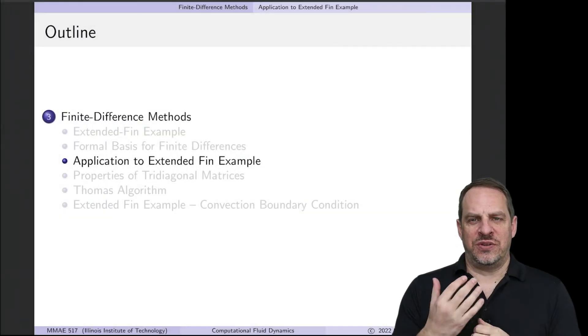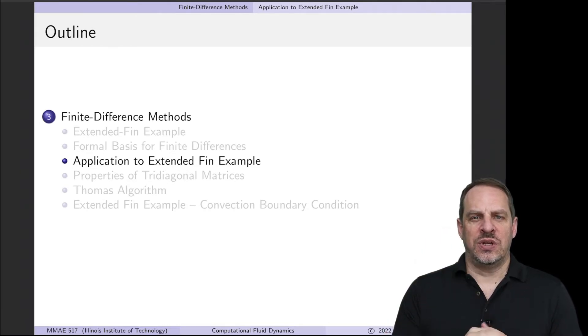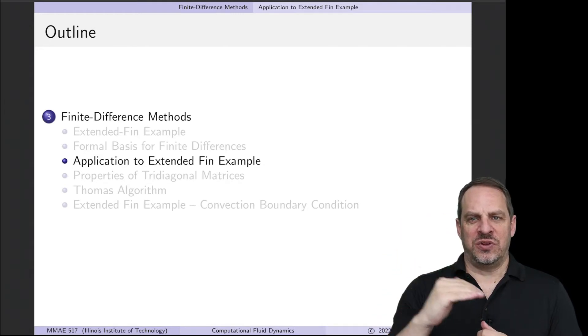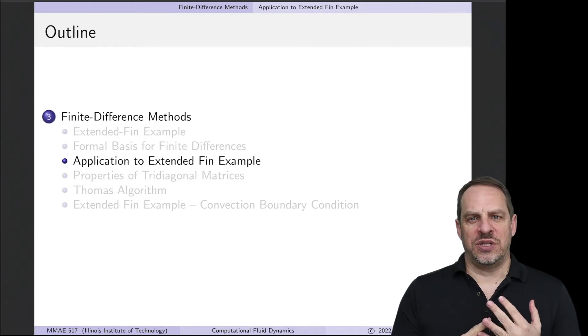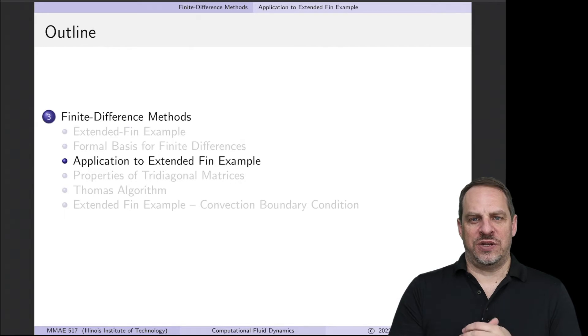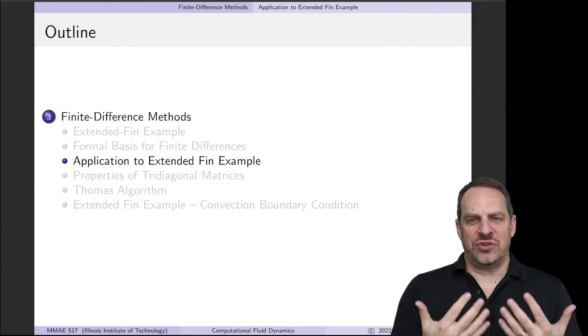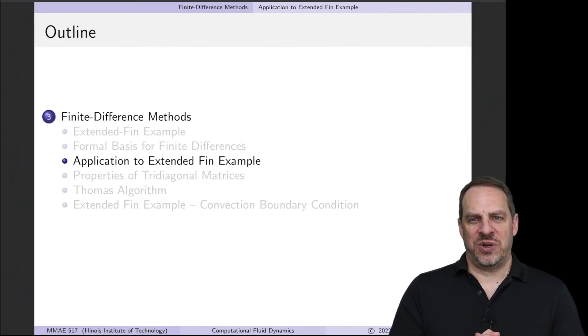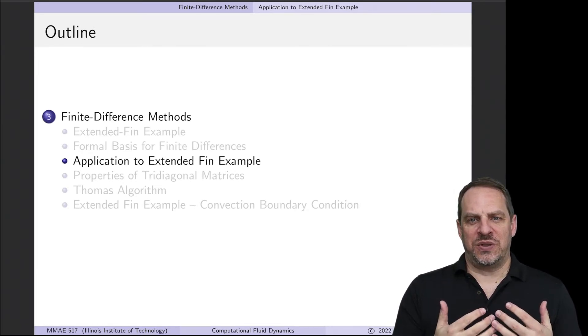Two videos ago, we introduced the extended fin example. We used that as an application to apply the first two of the three steps in the numerical solution procedure. Step one was to obtain the governing equation that governs that particular physical system, which is a second-order linear variable coefficient ordinary differential equation. And then step two was to discretize it using, in this case, the finite difference method in order to get a discretized version of the problem in the form of a linear system of algebraic equations. In the previous video, we looked at the formal basis for finite difference methods so we can see where these finite difference approximations come from.